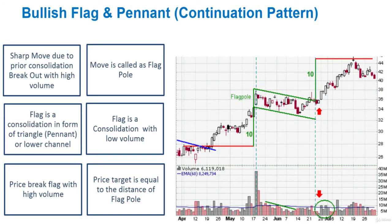Now we discuss the bullish flag and pennant continuation pattern in detail. As the chart shown on your screen, you see a vertical green line which is followed by a powerful movement supported by high volume. There is then a small consolidation with low volume that forms a flag pattern. Once the price breaks that flag pattern, we get a forecasted future price target.